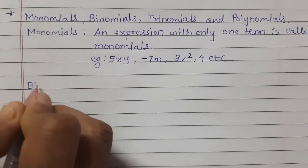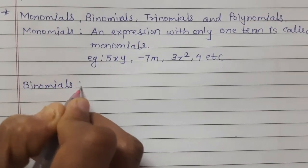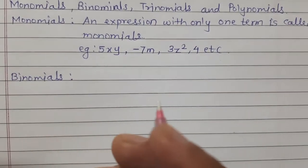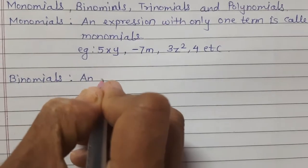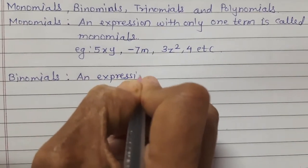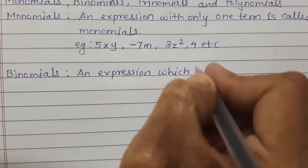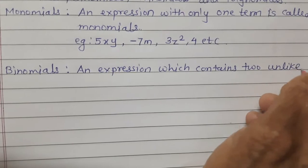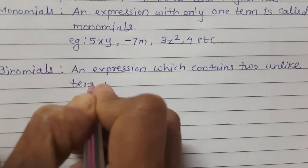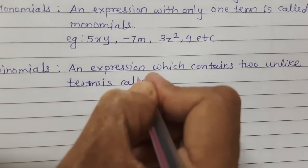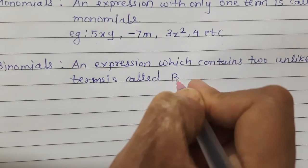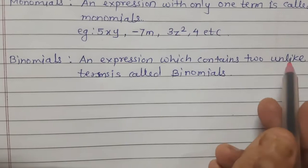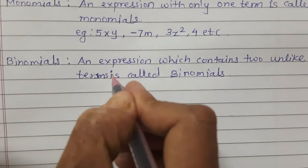Now let's see what is meant by binomial. An expression which contains two unlike terms is called a binomial.